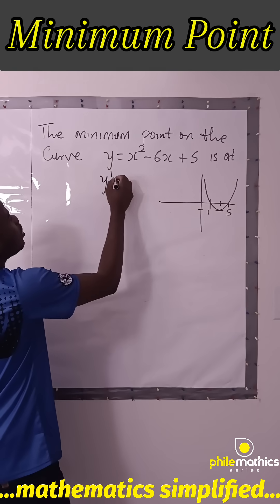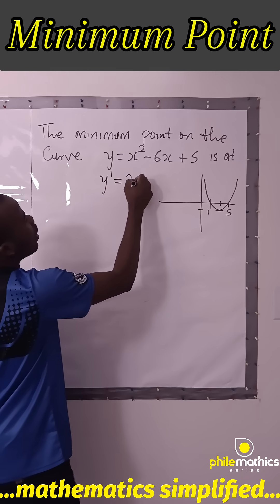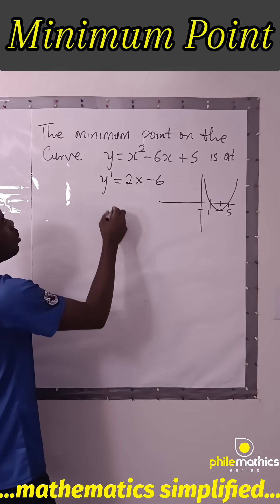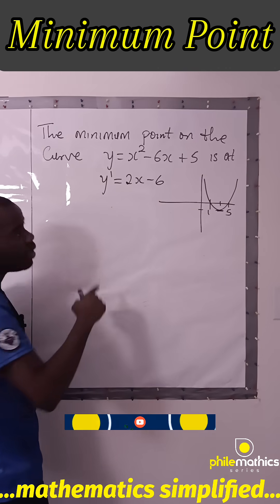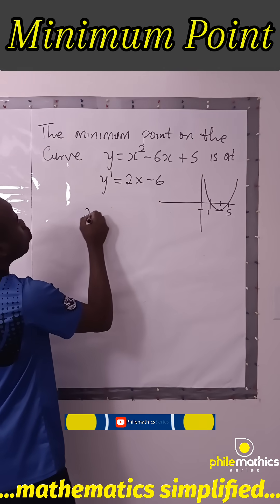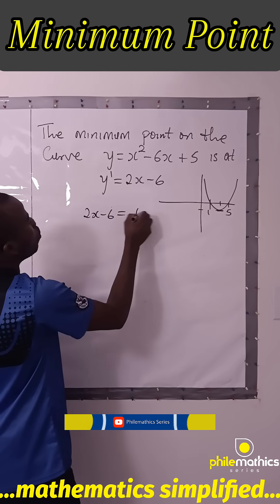So if we differentiate this with respect to x, it should be 2x minus 6. We have to equate this to zero because at the critical point it is zero, so that 2x minus 6 has to be zero.